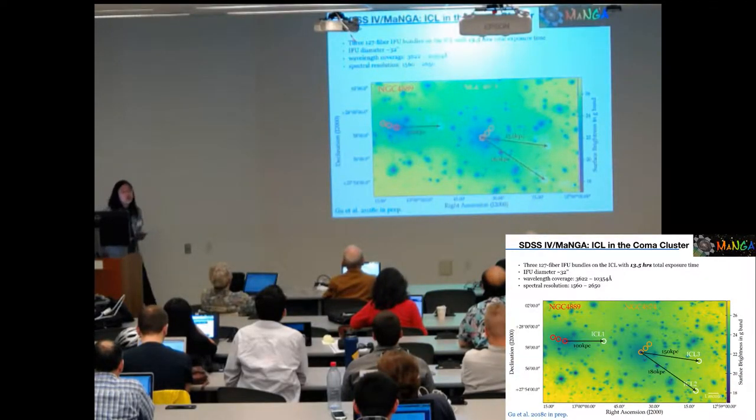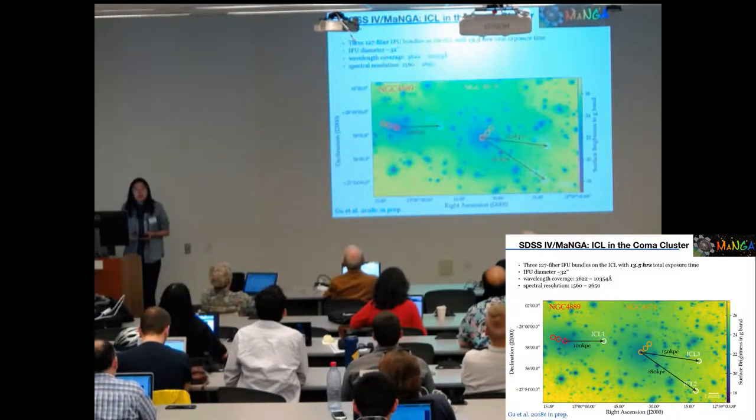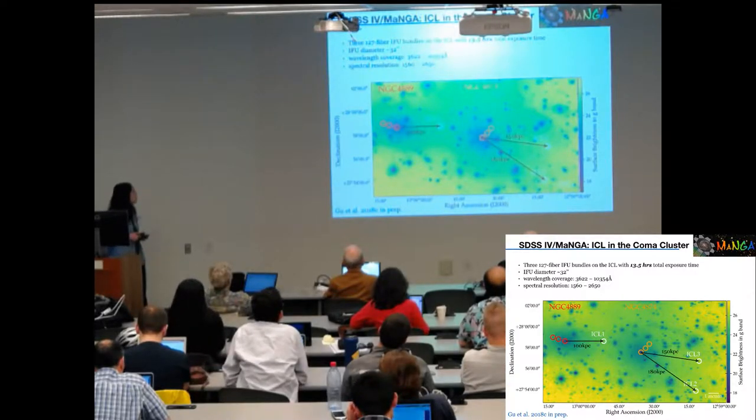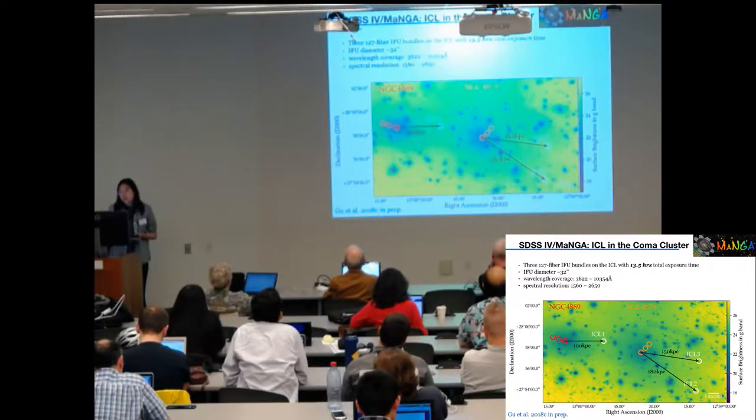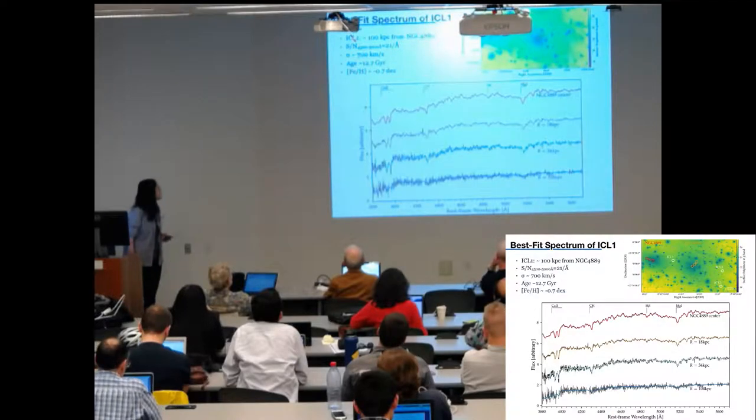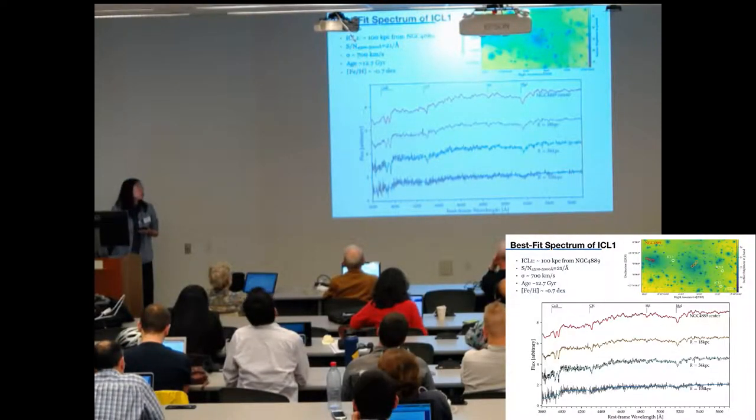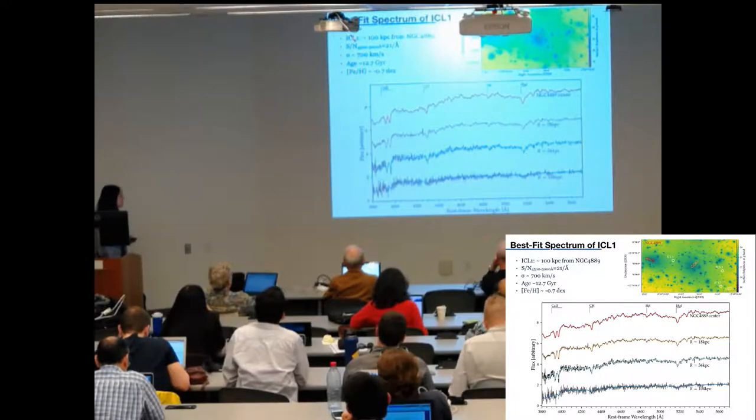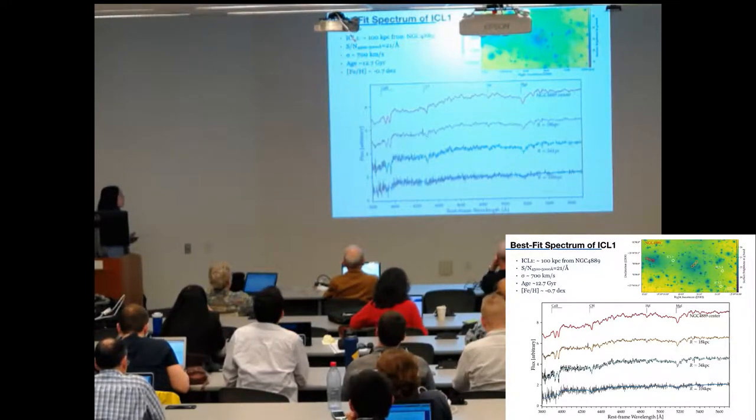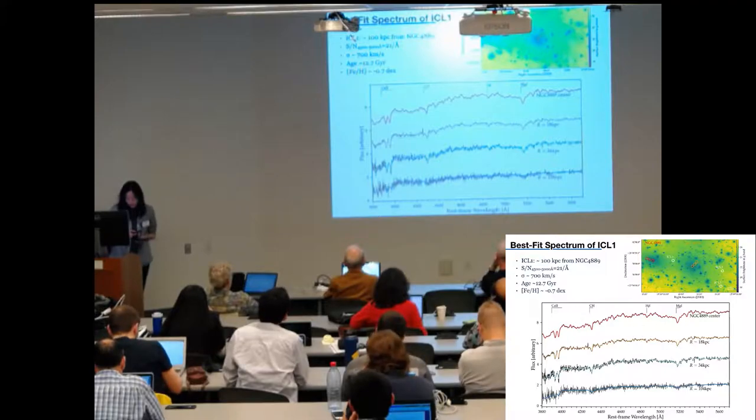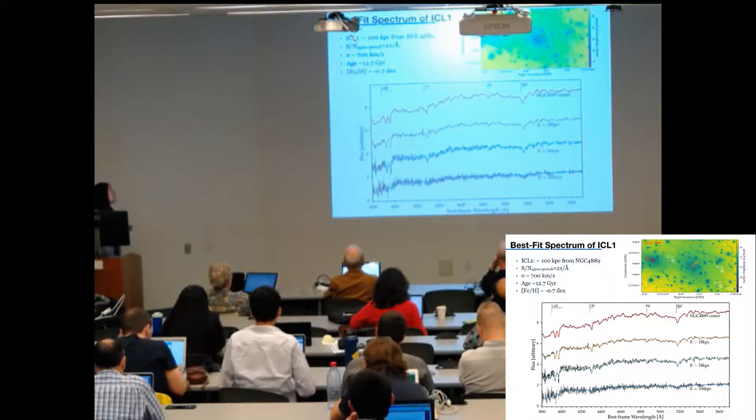And this picture shows the locations of these ICL bundles. The color indicates the surface brightness level in G-band. And for the ICL bundles, their surface brightness is around 25 to 27 mag per square arcsecond. So this is a very difficult region for the spectrograph. And here I show how well we are able to fit the spectrum from the BCG center out to 100 kiloparsecs. The last spectrum is from one of the ICL bundles. And we can see the signal-to-noise ratio is pretty low. So this is a very challenging measurement. But it gives us useful information.